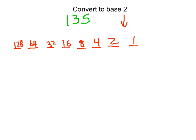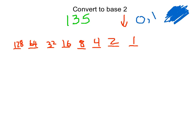Now we're in base 2. What numbers are we allowed to use in base 2? We're allowed to use 0s and 1s only. The symbol for 2 does not exist in base 2 — we can represent it, but we don't use that symbol in that base. So we want to strategically put 0s and 1s in these columns in order to get a number that equals 135.